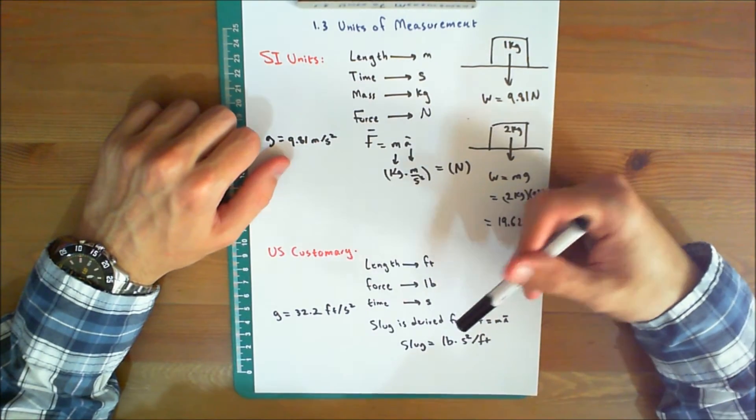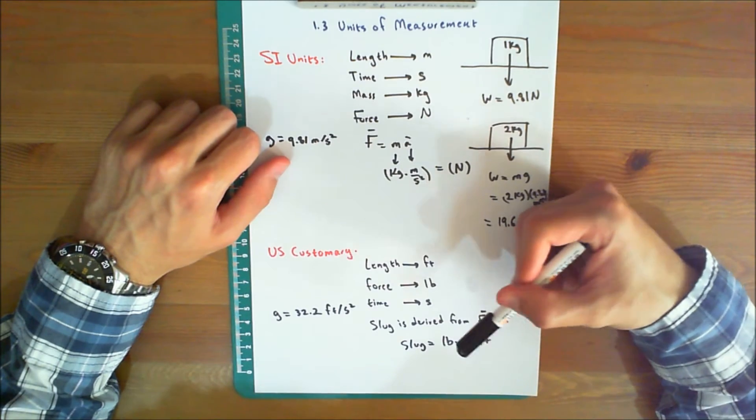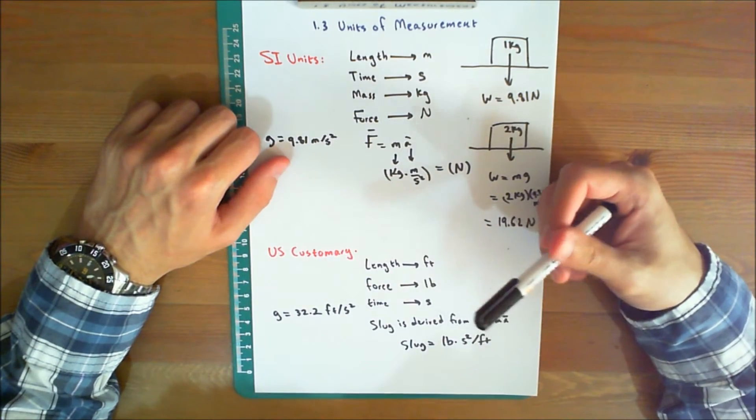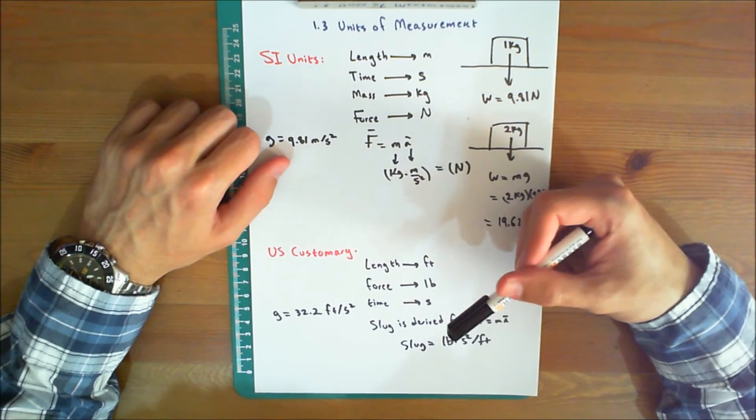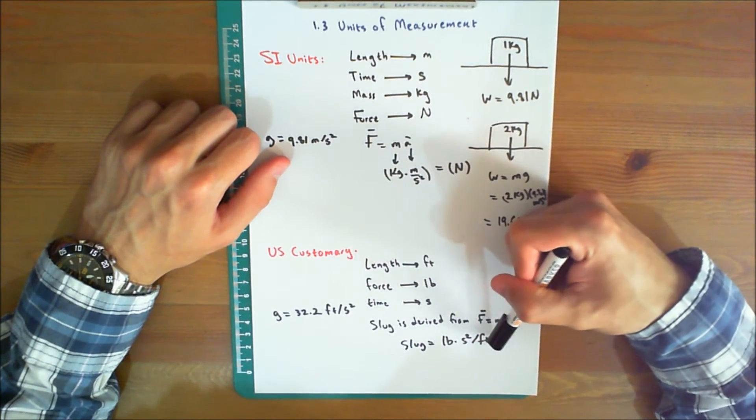is derived from F equals mA. Therefore, one slug is equal to the amount of matter accelerated at one foot per second squared when acted upon by a force of one pound. So, one slug equals pound times second squared per foot.